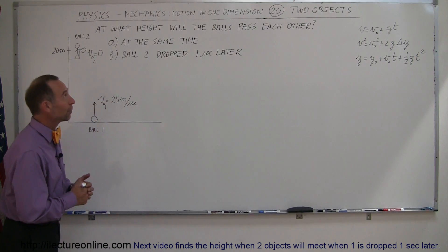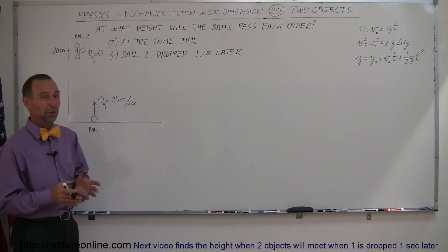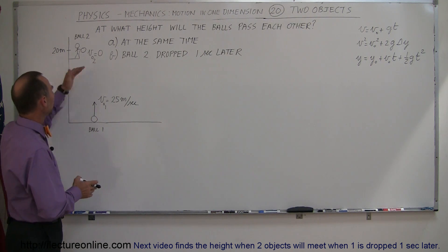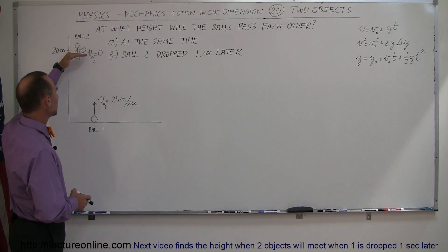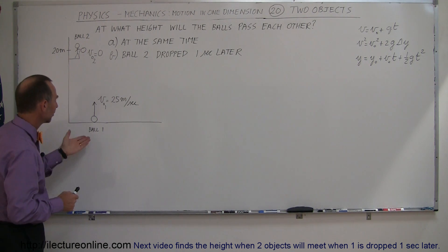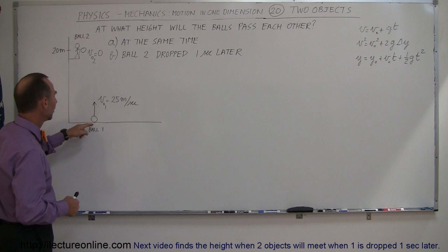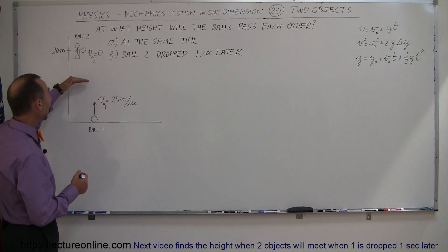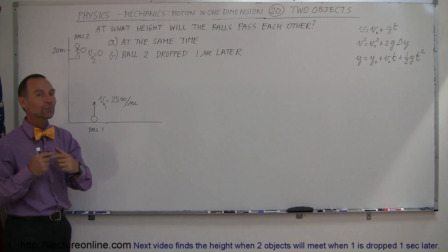Another classical example of a problem dealing with motion in one dimension, especially free fall, is when two objects are involved. In this case, we have one object that's being dropped from a height of 20 meters with initial velocity equal to zero, so we're just dropping the object. The second object is thrown upward from the ground at an initial speed of 25 meters per second. And the question is, at what height will the two balls meet?